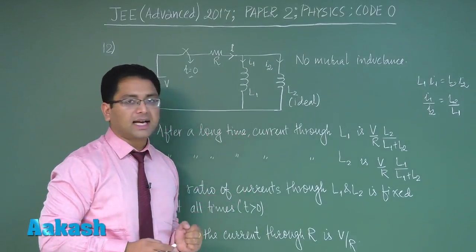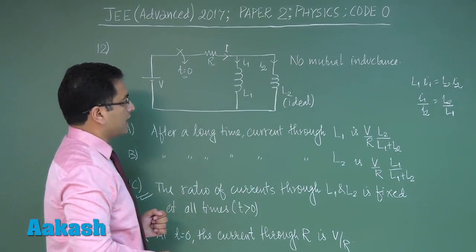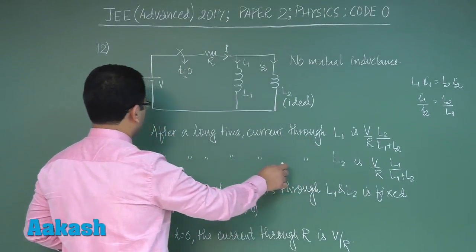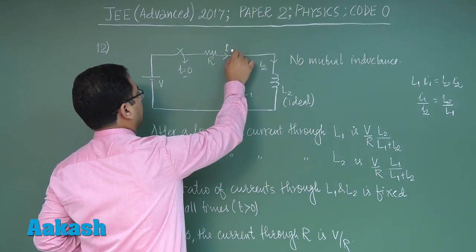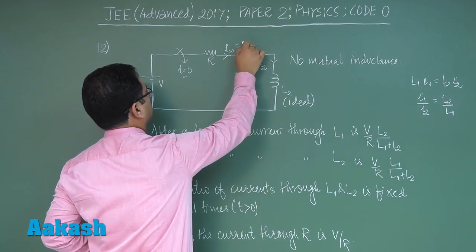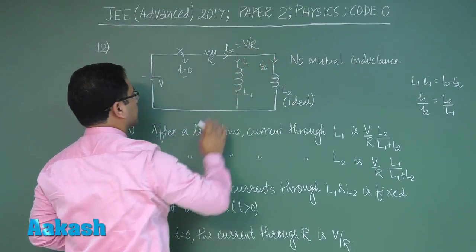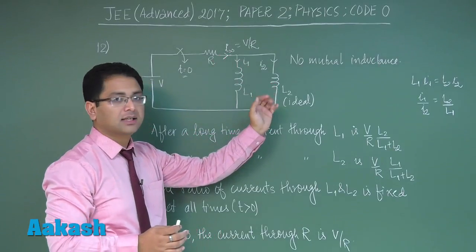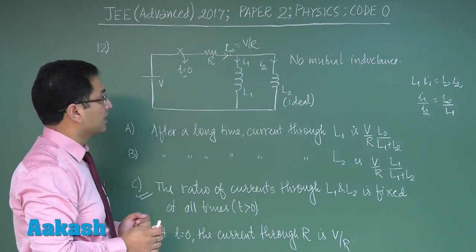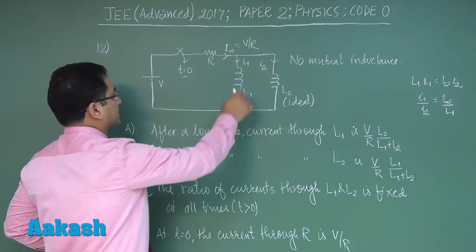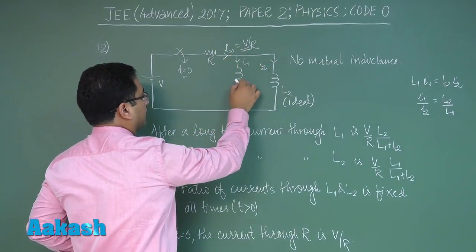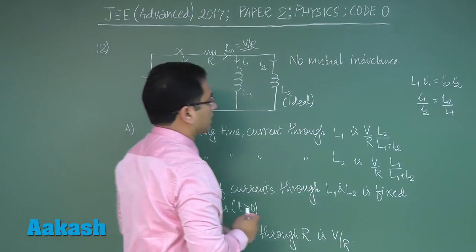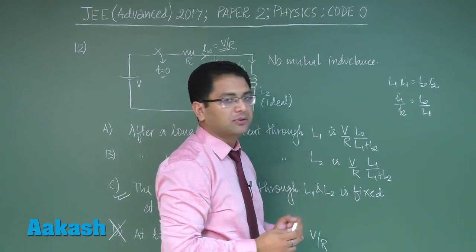After a long time current through L1 and L2 has to be found out. I at infinity would be V upon R. Reason is straightforward because these inductors behave like short circuits. Now this current is V by R and this current will divide between these two L1 and L2 in this particular ratio.